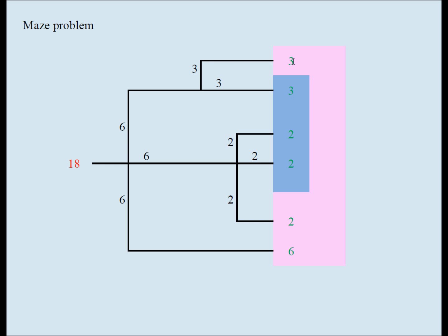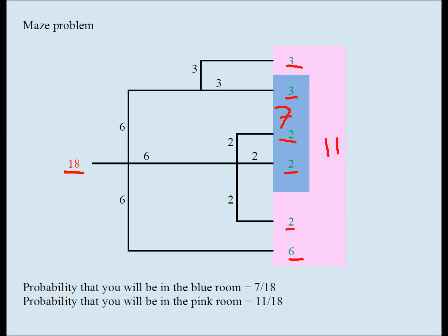This path leads me to the blue room three times. This path leads me to the blue room twice. This path leads me to the pink room twice. This path leads me to the pink room six times. And this path leads me to the pink room three times. Now out of 18 times altogether, I ended up being in the blue room three plus two plus two, which is seven times. And out of 18, I ended up being in the pink room six plus two plus three, which is eleven times.